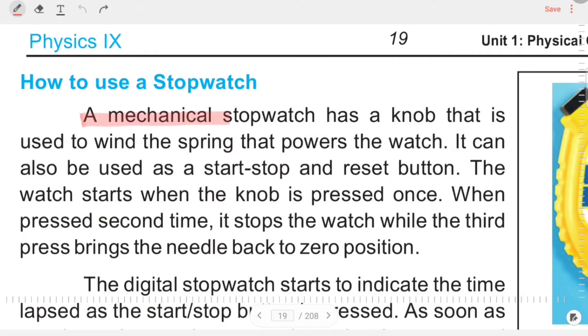A mechanical stopwatch has a knob that is used to wind the spring that powers the watch. It can also be used as a start, stop, and reset button.